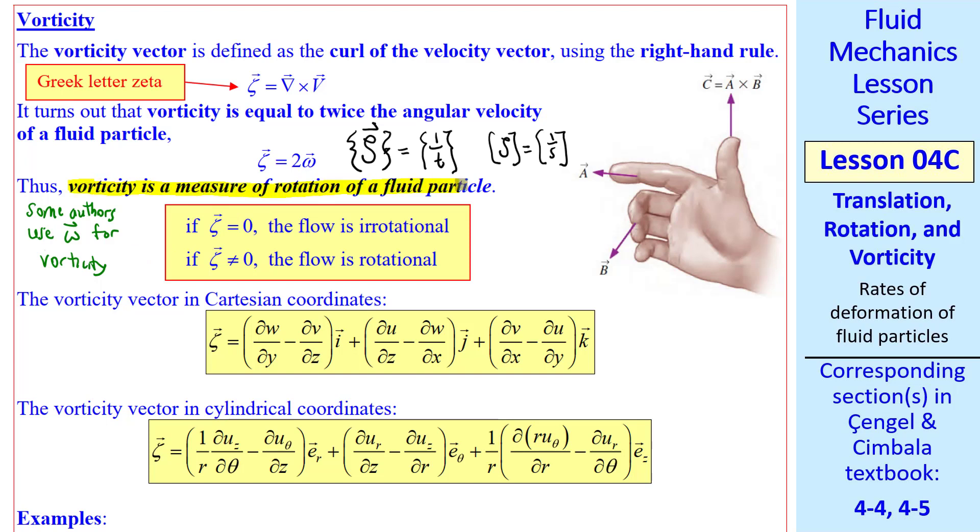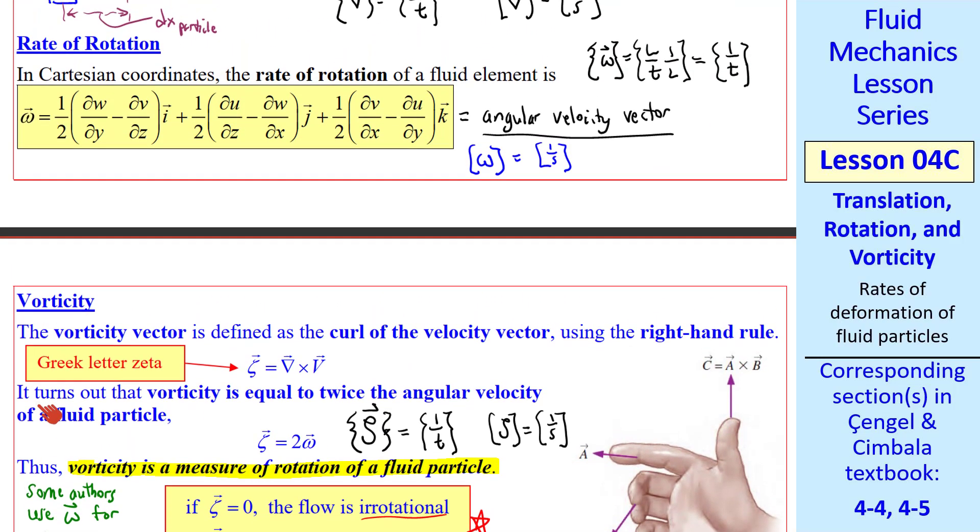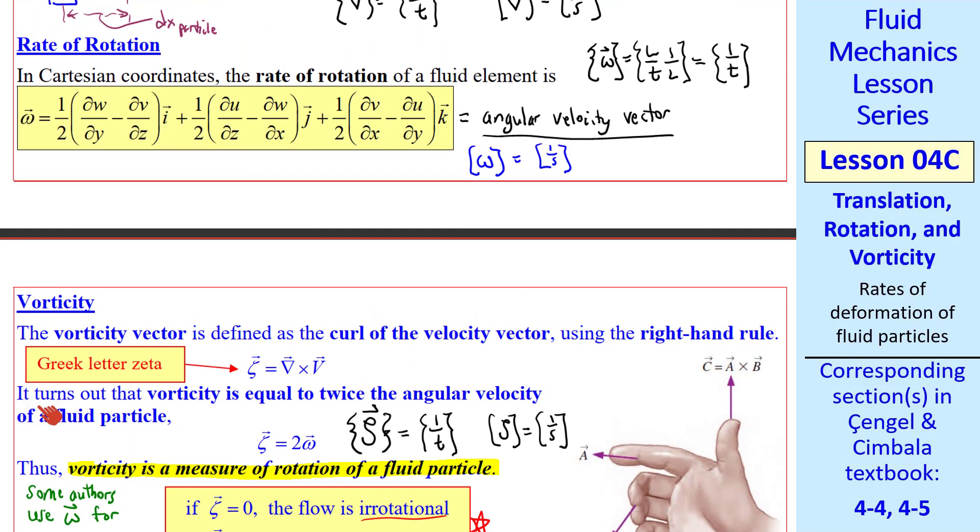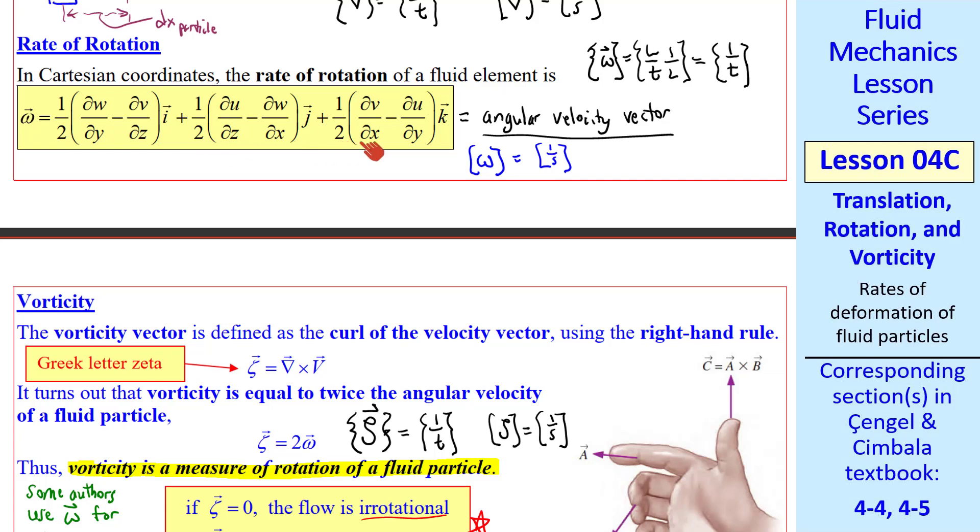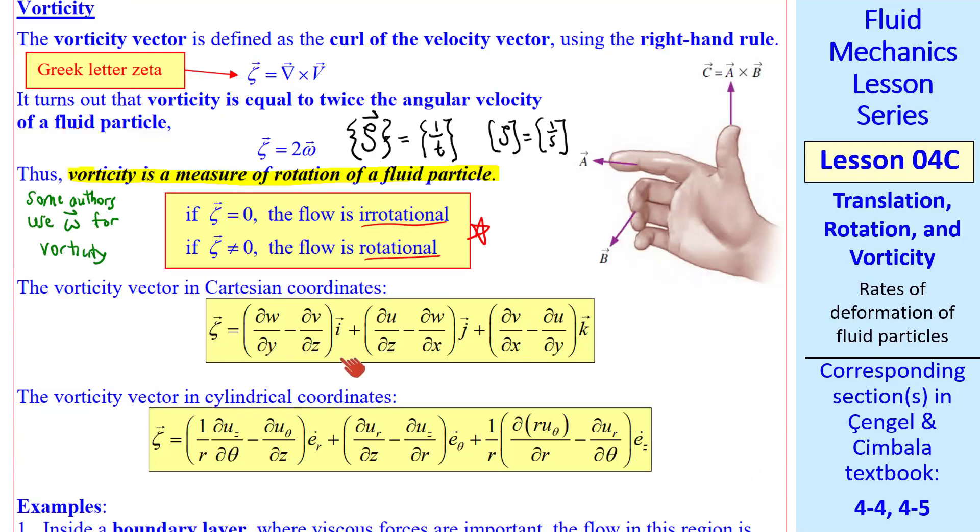Since vorticity is just twice the angular velocity, vorticity is a measure of rotation of a fluid particle. Namely, if zeta is 0, the flow is irrotational. And if zeta is not 0, the flow is rotational. Since we already have the rate of rotation or angular velocity vector up here, we just multiply by 2 to get the vorticity vector.